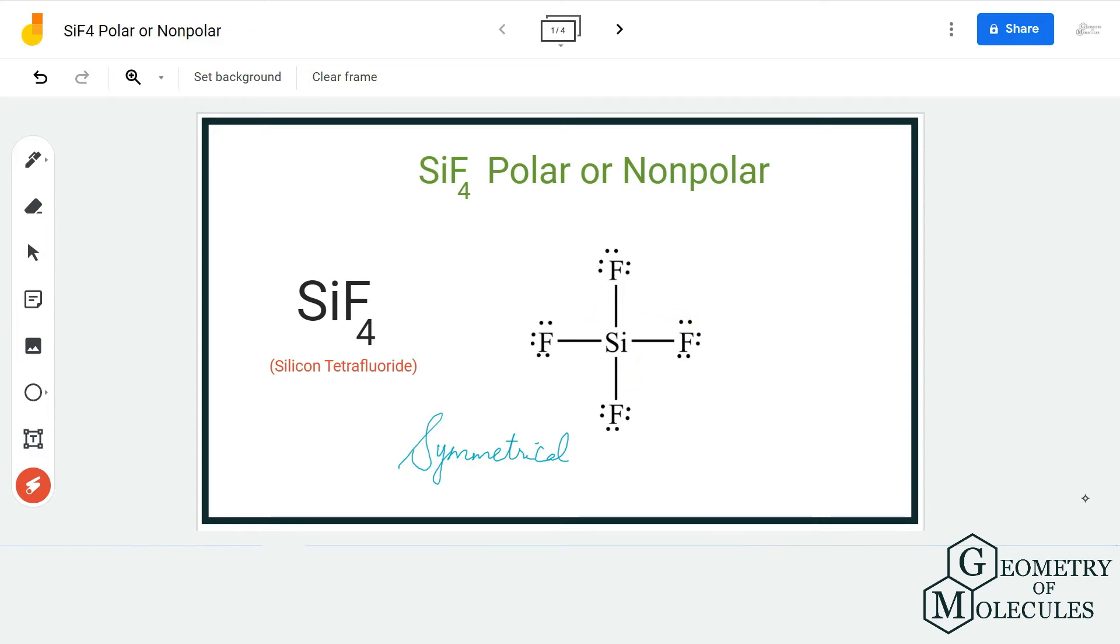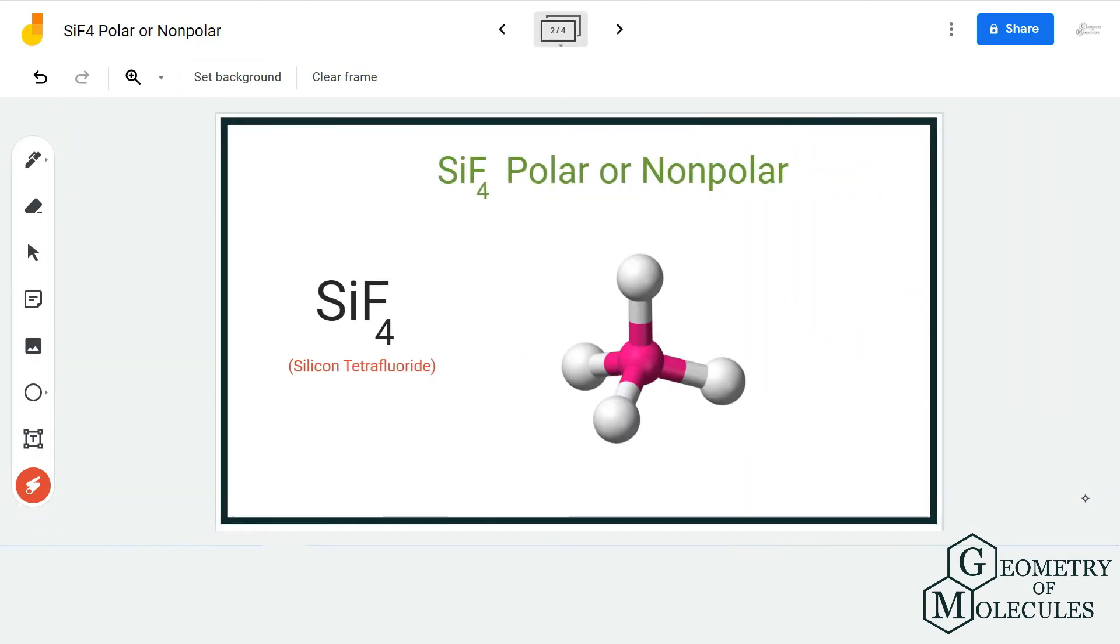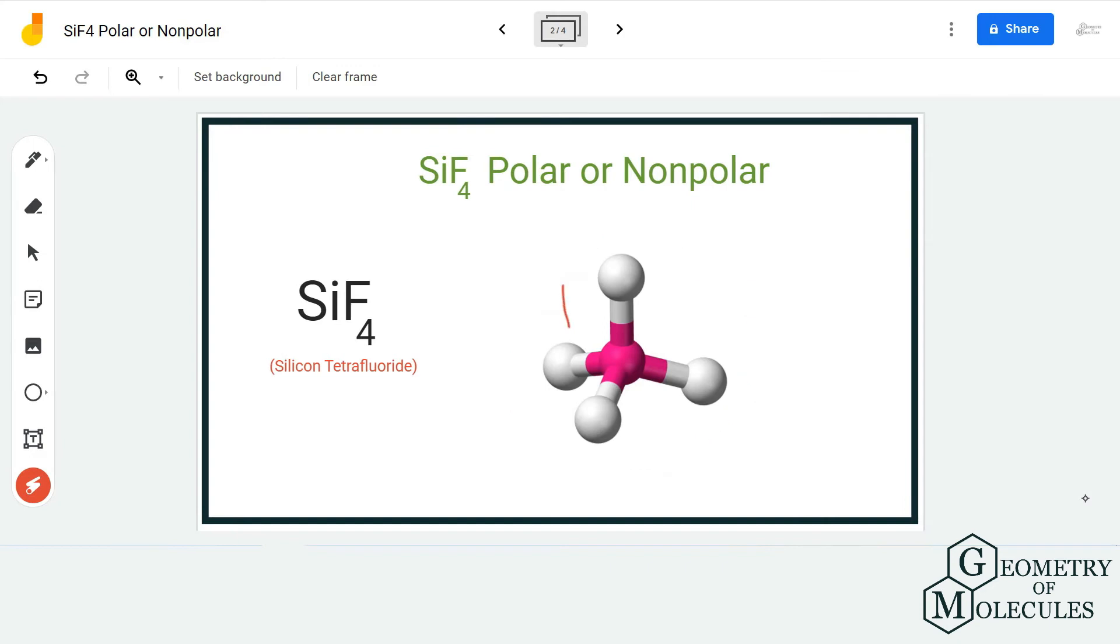If you look at its shape, it is tetrahedral, as you can see. All four fluorine atoms are spread out evenly in three-dimensional space. They try to cancel the repulsive forces by spreading out evenly so that there is no uneven distribution of charges.